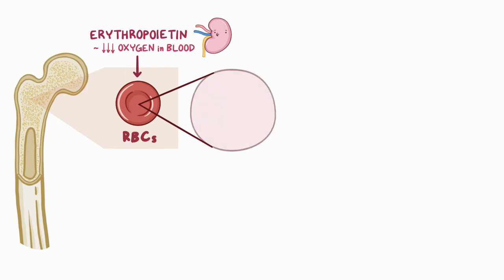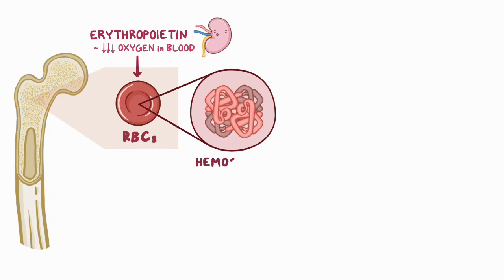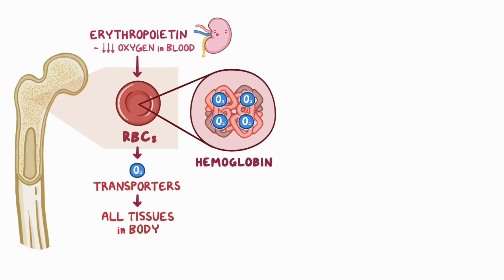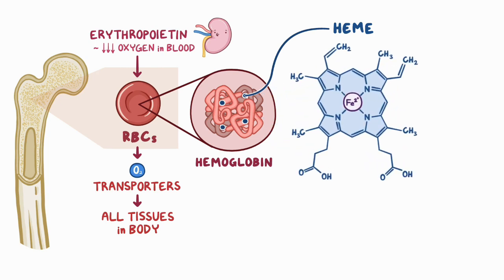Taking a closer look at our RBCs, we can see they're loaded with millions of copies of the same exact protein called hemoglobin, which binds to oxygen and turns our RBCs into little oxygen transporters that move oxygen to all the tissues in our body. Zooming in even closer, each hemoglobin molecule is made up of four smaller heme molecules, which have iron right in the middle. Oxygen binds to the iron, so each hemoglobin molecule can bind four molecules of oxygen.